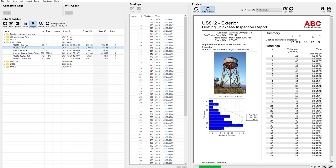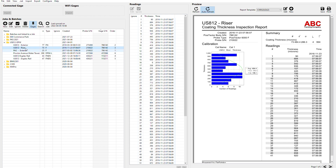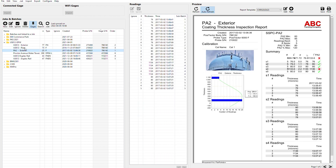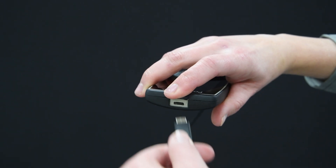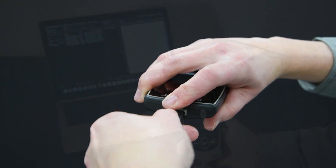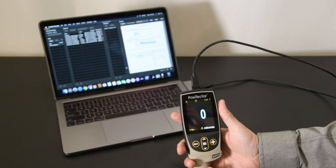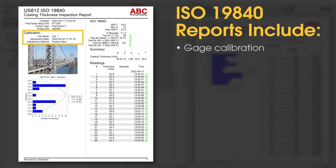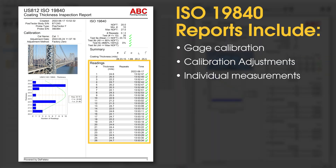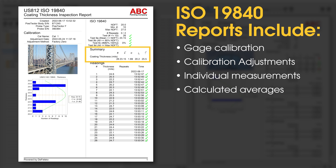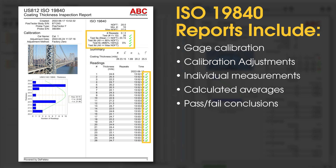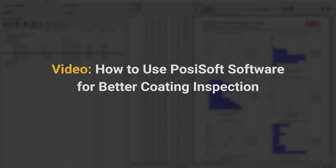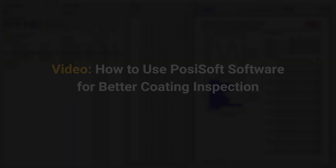Once measurements have been saved, PosiSoft software makes it easy to manage data and create professional custom reports. Simply connect your gauge via USB or Wi-Fi to quickly import your readings and save a PDF report. Information such as the gauge calibration, calibration adjustments, individual measurements, calculated averages, and pass-fail conclusions will be presented. Learn more about PosiSoft software in the 'How to use PosiSoft software for better coating inspection' video.